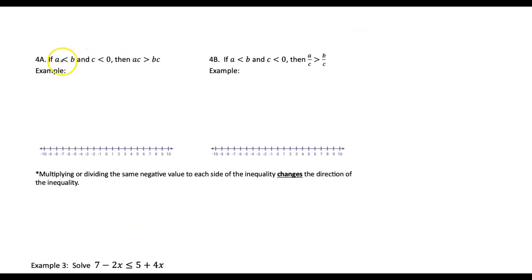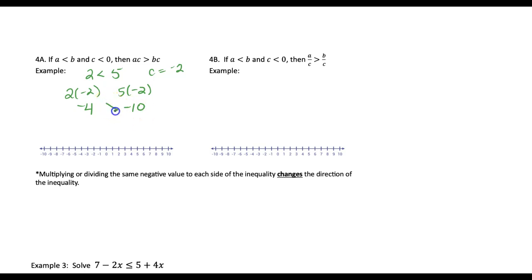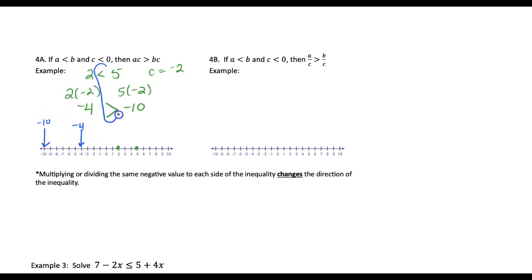One more property: keeping 2 as less than 5 and now using a negative number, c as negative 2. Multiplying both sides: 2 times negative 2 and 5 times negative 2 give us negative 4 and negative 10. In this case, negative 4 is actually bigger than negative 10. Looking on a number line, 2 is on the left of 5, but when you multiply by a negative, you're reflecting it over the 0 because of the negative sign, and now negative 4 is no longer on the left of negative 10. Because of the reflection, negative 4 moved to the right side and negative 10 moved to the left.